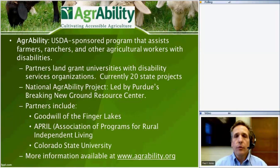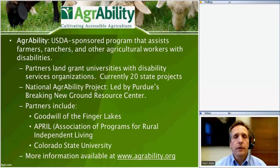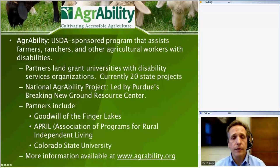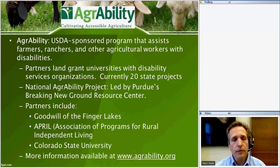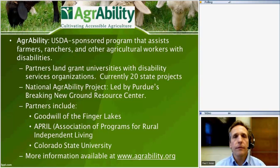For those not familiar with AgrAbility, we're sponsored by the U.S. Department of Agriculture and focus on working with people in agriculture who have a disability or functional limitation. Every AgrAbility project is a partnership between a land grant university and at least one nonprofit disability services organization — there are currently 20 projects around the country. The National AgrAbility Project is led by Purdue's Breaking New Ground Resource Center in West Lafayette, Indiana, with partners including Goodwill of the Finger Lakes, APRIL, and Colorado State University. Visit AgrAbility.org for more resources.